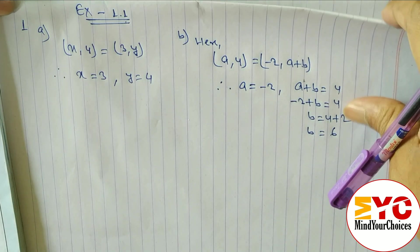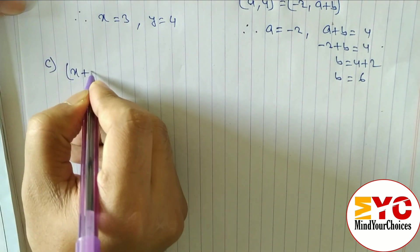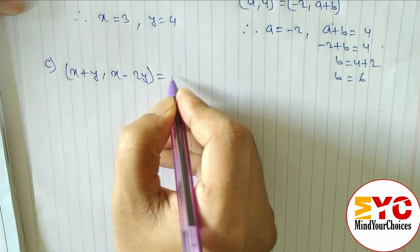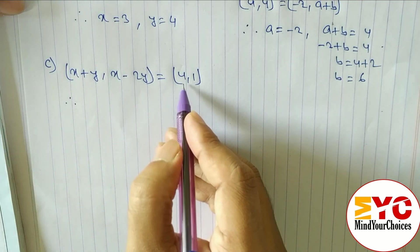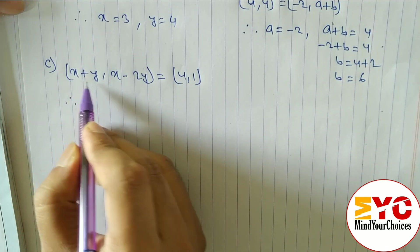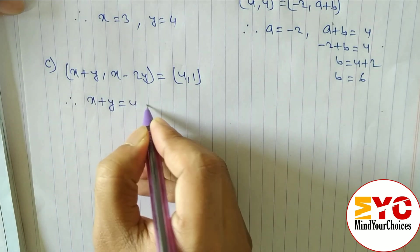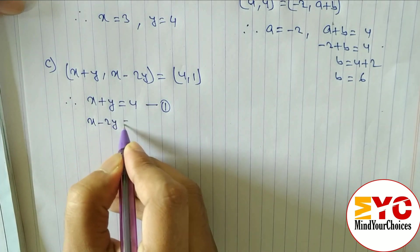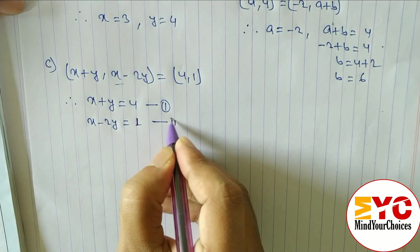Now question c: (x+y, x−2y) is equal to (4, 1). From the x component, x plus y is equal to 4 — this is equation 1. From the y component, x minus 2y is equal to 1 — this is equation 2.